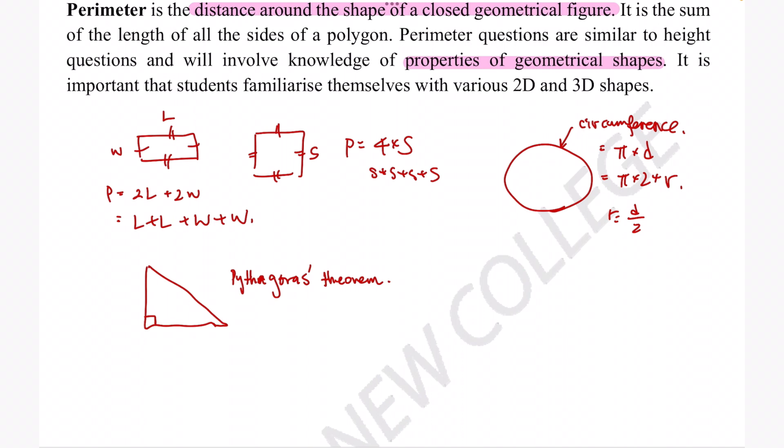This theorem says that if we label these three sides as a, b, and c, then we can use this equation: a squared plus b squared is equal to c squared. Rearranging this equation can allow us to figure out the length of any side we want. This also has a dedicated video, so check that out if you want to learn more about Pythagoras's theorem.